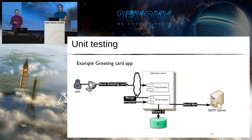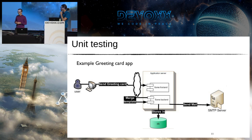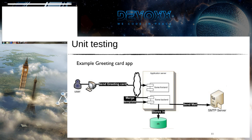For this presentation we created a little greeting card application. It's a web application that allows the user to send a greeting card to friends. It stores something in a database, does some merging to choose a template — it's nearly Christmas so we want fancy layout — and finally sends a mail to an SMTP server. Jeroen will now show how we do unit testing on this application.